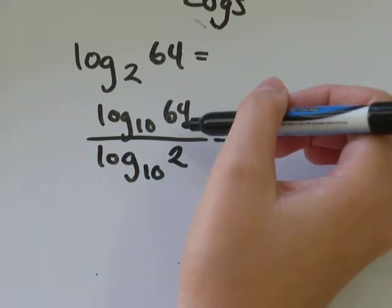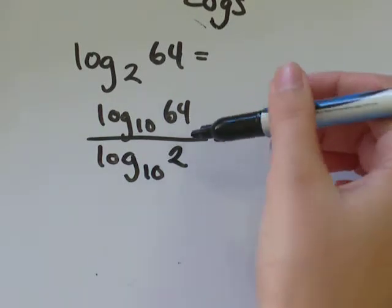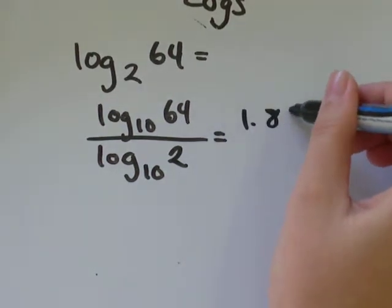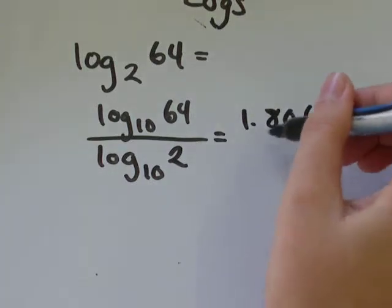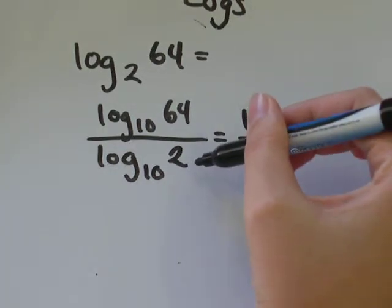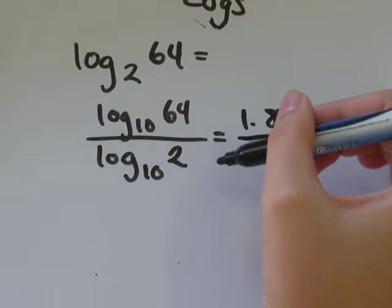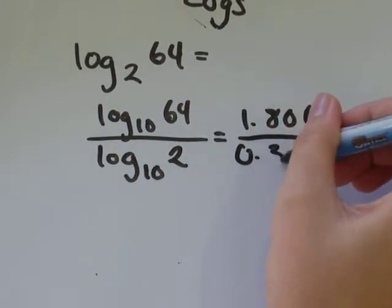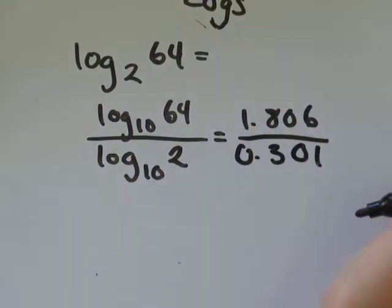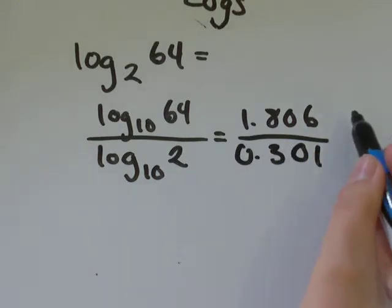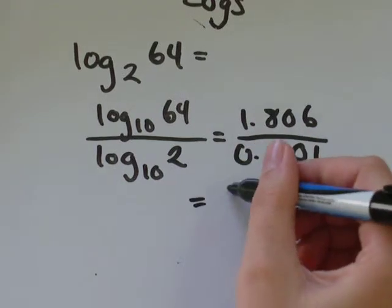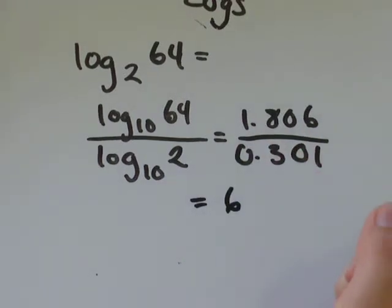I'm going to type in log 64 on my calculator and I'll get 1.806 divided by log 2 equals 0.301. So 1.806 divided by 0.301 equals exactly 6.